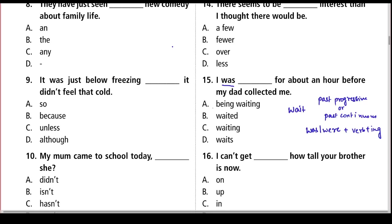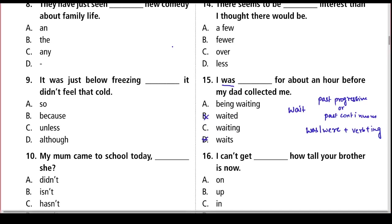In our options, we have two candidates: option A which says 'being waiting' and option C which says 'waiting.' We can quickly eliminate the other two — B and D — because we already know we have 'was' here, so the verb must have an '-ing' ending.